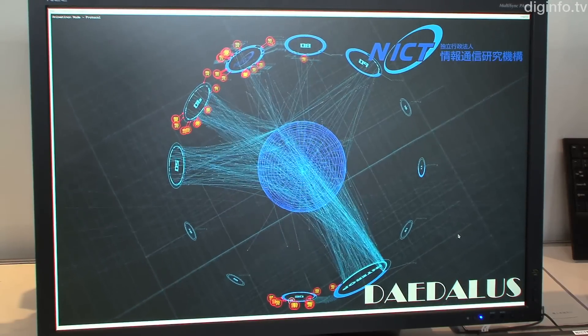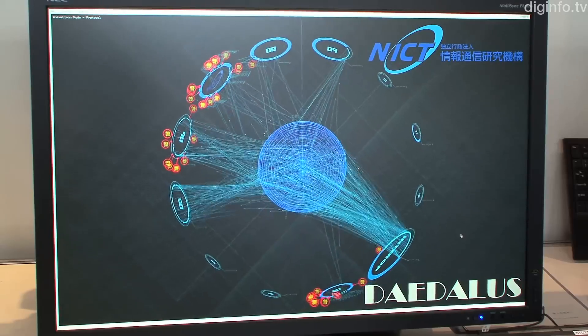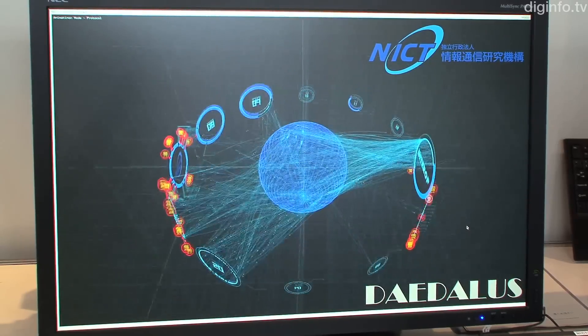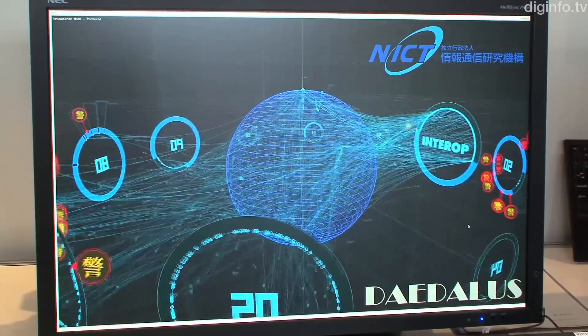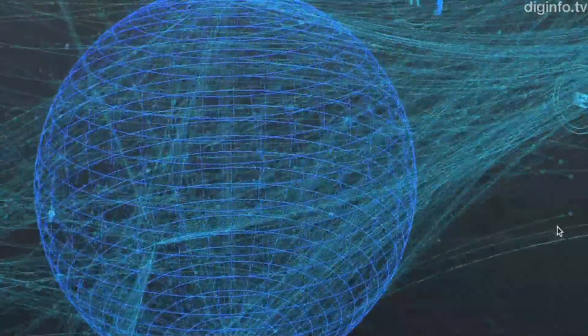The sphere in the center represents the internet, and the circles moving around it represent networks under observation. The state of an attack is shown using 3D graphics and can be viewed from any perspective.